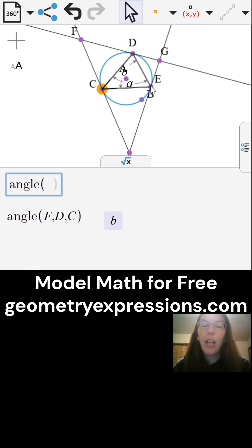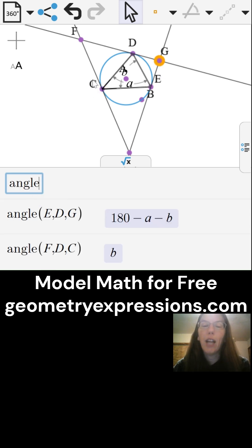The third angle of the triangle is 180 subtract a and b.